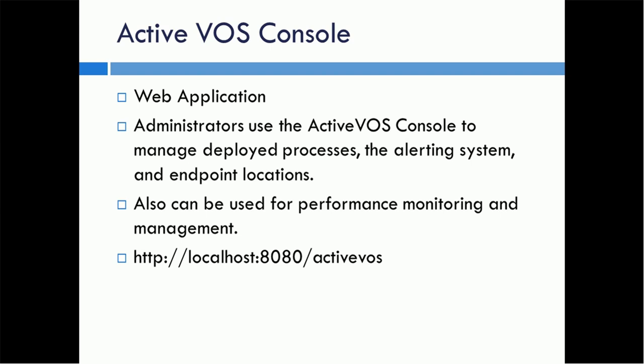The Activos console can also be used to perform activities such as performance monitoring and performance management. Those kinds of application monitoring and application controlling activities will be done using this console. To access Activos, you have to use HTTP or HTTPS — the encrypted version is also available. Based on your configuration, you can access via HTTP or HTTPS, then specify the server name and port on which Activos is running.